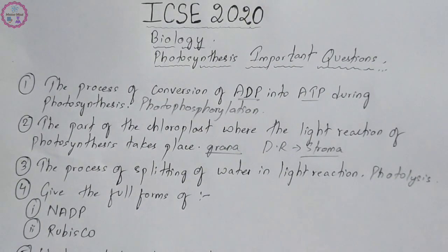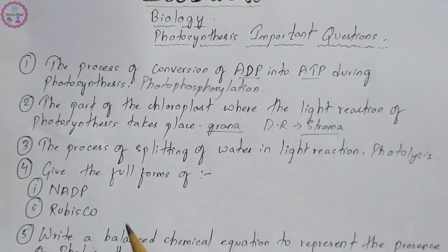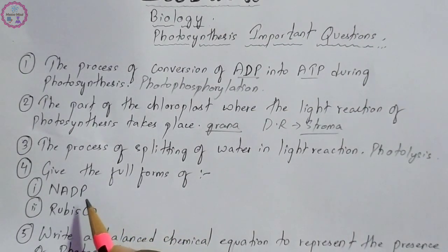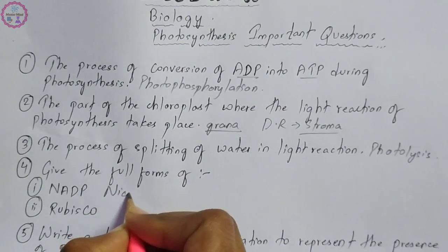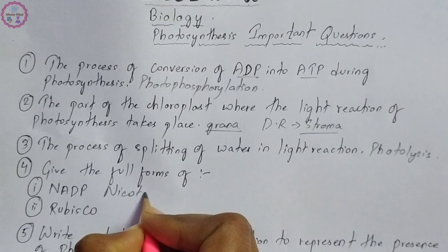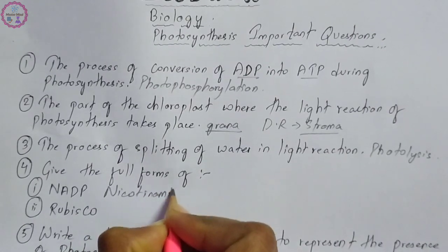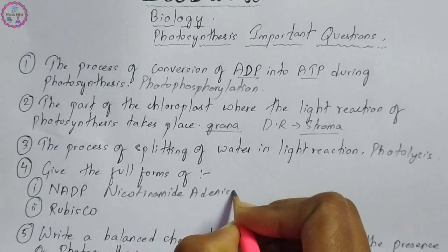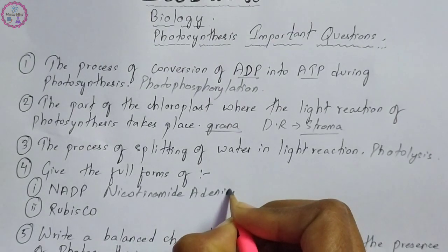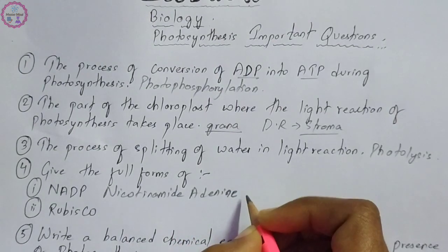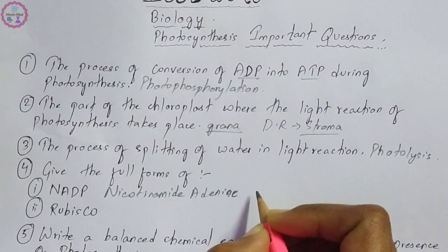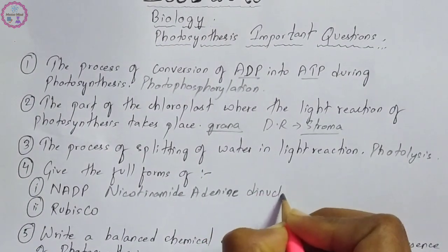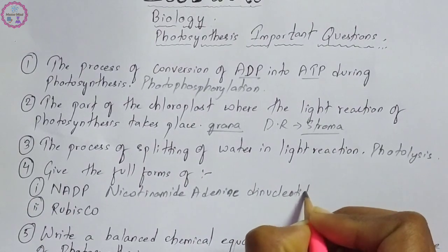Moving on to question number four — you have to give the full forms of the following. The first one is NADP. The full form of NADP is nicotinamide adenine dinucleotide phosphate.